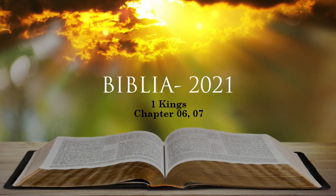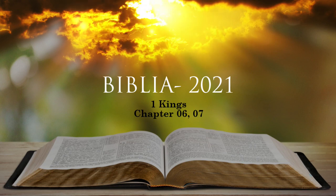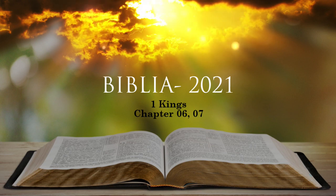He made the sea of cast metal, circular in shape, measuring ten cubits from rim to rim and five cubits high. He took a line of thirty cubits to measure around it. Below the rim, gourds encircled it — ten to a cubit — cast in two rows in one piece with the sea. The sea stood on twelve bulls: three facing north, three facing west, three facing south and three facing east. The sea rested on top of them and their hindquarters were towards the center. It was a handbreadth in thickness and its rim was like the rim of a cup, like a lily blossom. It held two thousand baths.